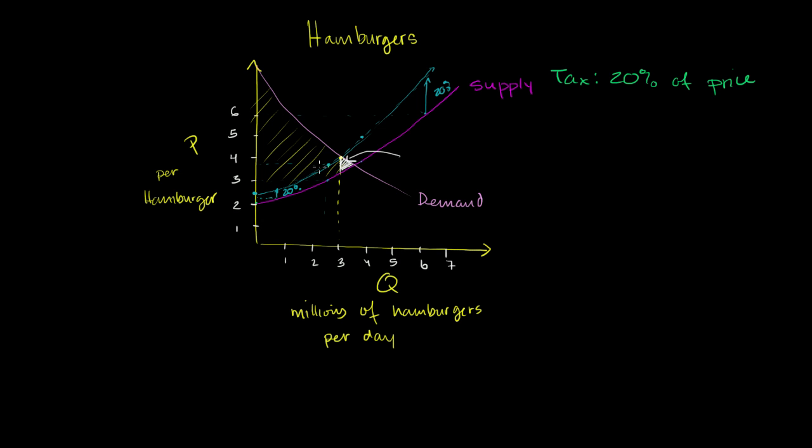So this is why taxation is generally considered inefficient. Obviously you have to do some of it, but it's generally inefficient. It reduces some level of economic activity, at least if you make all the assumptions in this model. And you have this deadweight loss, this surplus that can't be had by anyone. So there you still have a deadweight loss.